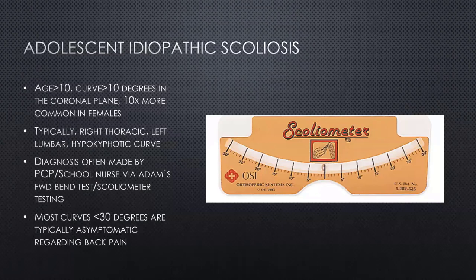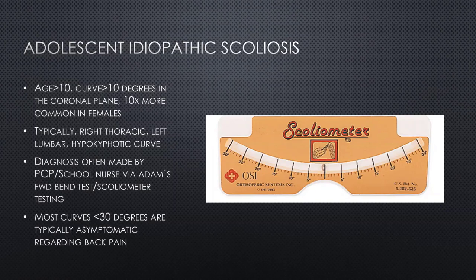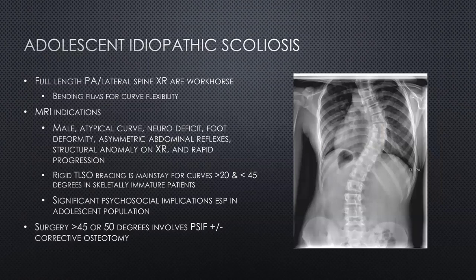There are tons of scoliosis screening protocols through elementary schools, school nurses, and primary care doctors, using the Adams forward bend test — the patient bends forward and touches their toes, allowing assessment of abnormal rib rotation due to the rotational abnormalities in scoliosis. The scoliometer is one device used, with some correlation between degrees of rotation and coronal plane deformity. Most curves under 30 degrees are thought to be asymptomatic, contributing to musculoskeletal back pain, which becomes a hot topic in clinic with patients and families.